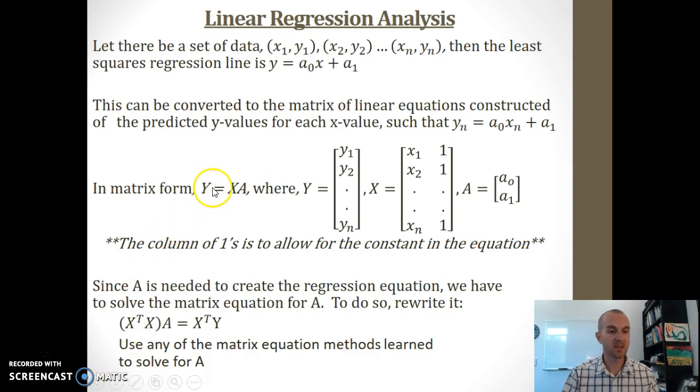So in matrix form, Y is the n by 1 matrix of all the y values. X is an n by 2 matrix where the first column represents all of our x values, and the second column represents the number 1 in every entry. The reason it's 1 is because it's x to the 0 power, and anything to the 0 power gives us 1. The capital A matrix represents the values we find for the slope and the y-intercept.